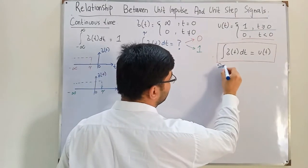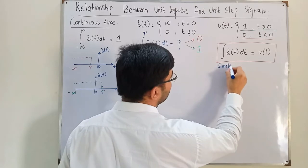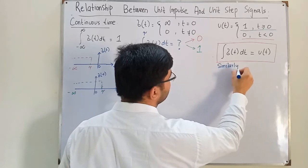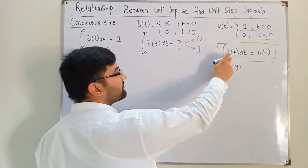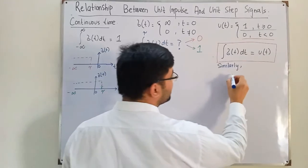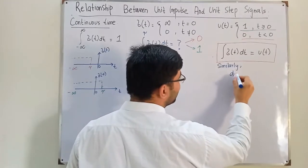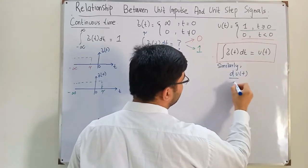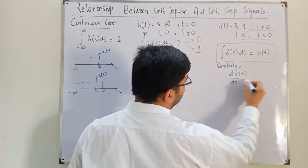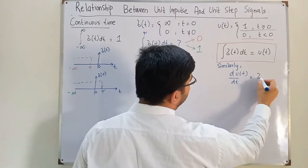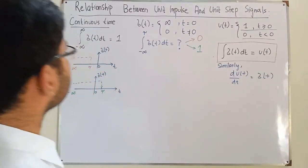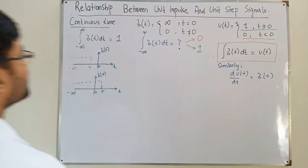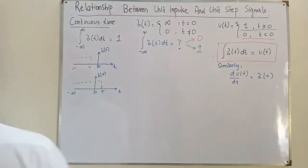From basic mathematics, if the integration of the impulse is the unit step, then the derivative of the unit step must be the impulse. Let's derive this properly.